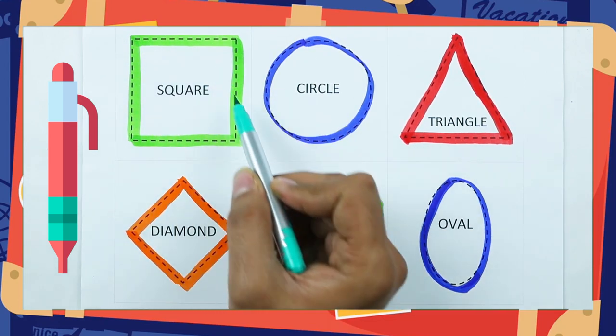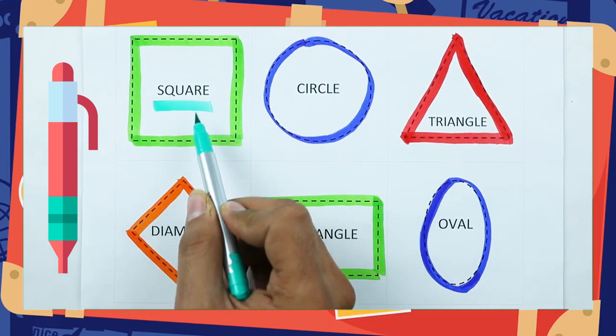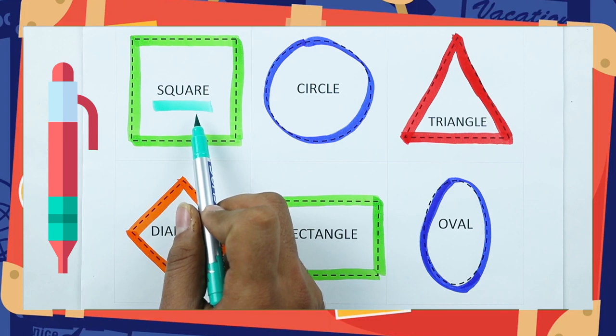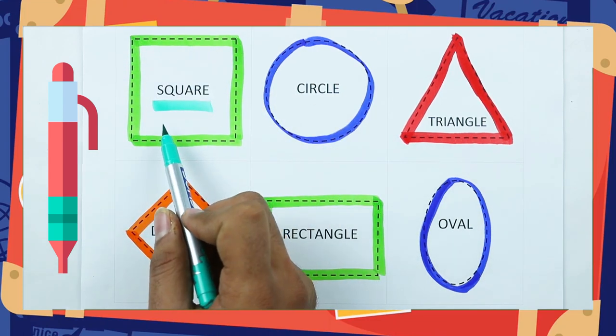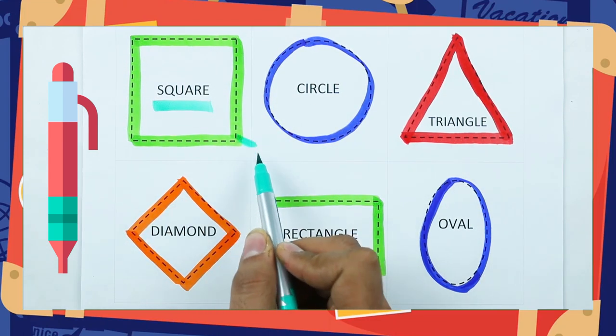Which shape is this? Tell me — square. S-Q-U-A-R-E. It's a square, with green color.